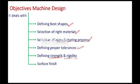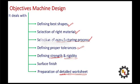Surface finish. Suppose, there is a friction to be reduced. We can increase the surface finish. Preparation of detail worksheet. This detail worksheet is going to be a documentation purpose. These factors should be a main objective for a machine design.